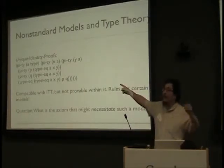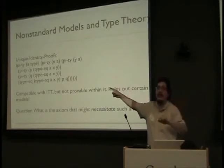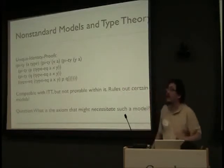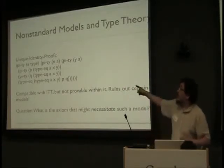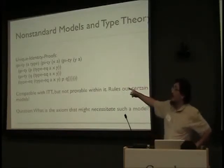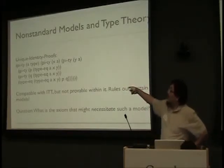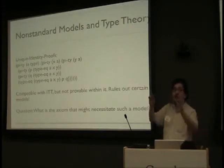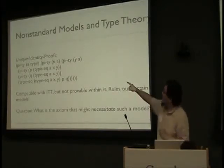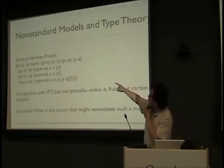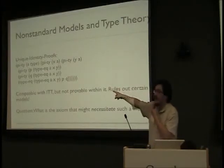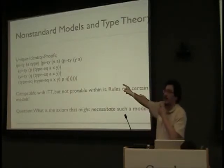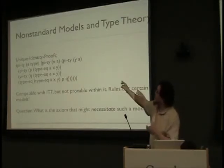One way to think about the homotopy interpretation of type theory is: it's a non-standard model. All along, we thought we were working in the theory of types corresponding to the typed lambda calculus or something, and it turns out we really weren't — we're working over a whole class of theories. And here's the principle: if we internalize the thing that I said didn't internalize — which says that all identity proofs are equal, called uniqueness of identity proofs, also known as axiom K.